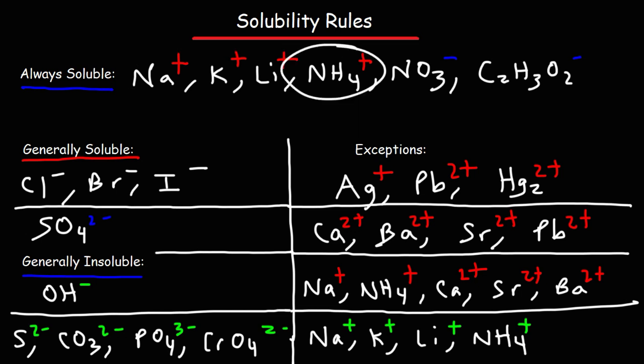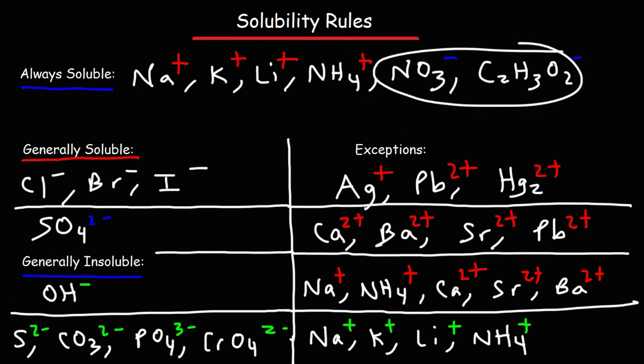Ammonium is also always soluble. And if you see either of these two polyatomic ions — nitrate or acetate — it's always soluble. You might find some rare exceptions, but for the most part, if you have a test and you see those two, generally speaking it's going to be soluble.